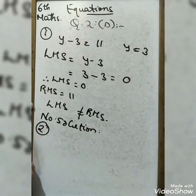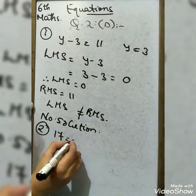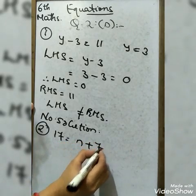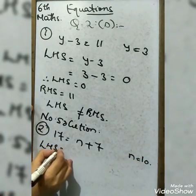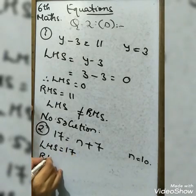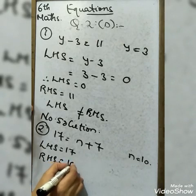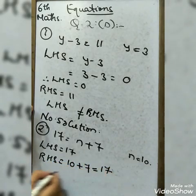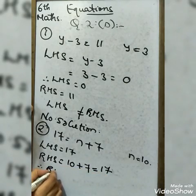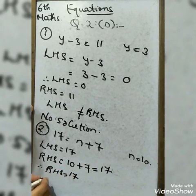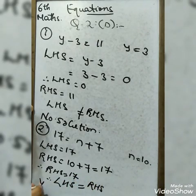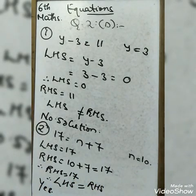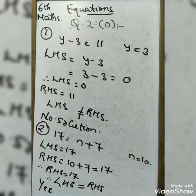Second entry: 17 = N + 7, with N = 10. LHS = 17. RHS = 10 + 7 = 17. Therefore LHS = RHS, so we write 'Yes' — this is a solution. We have solved these two entries; the remaining two you will do on your own.